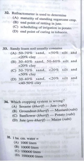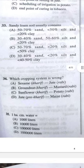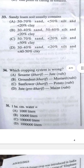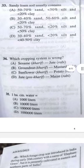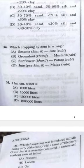Question 34: Which cropping system is wrong? The pre-kharif should be mentioned in every year, but here kharif is mentioned. Jute should be mentioned in kharif season but here it is mentioned in rabi. So that system is the wrong one.